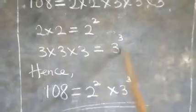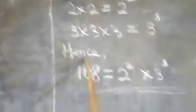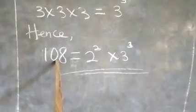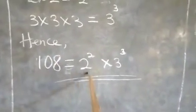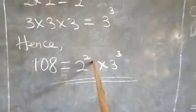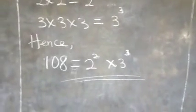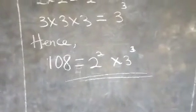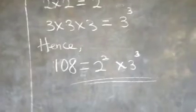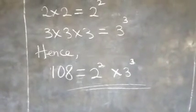And 3 to the power 3. Hence, 108 that is given to us is now equal to 2 to the power 2 multiplied by 3 to the power 3. And that is it. Now we have taken our answer to index form.